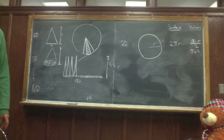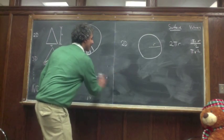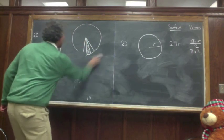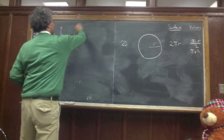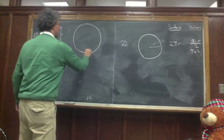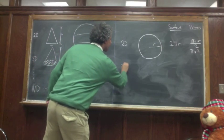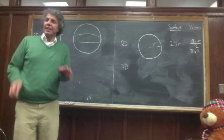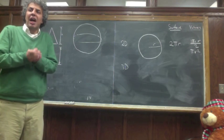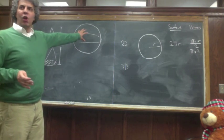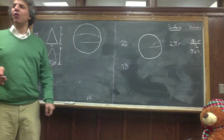Now we're going to go to three dimensions. The object we're going to have is going to be a sphere — you can imagine it being something like a watermelon. What I'm going to do is make exactly the same argument: I'm going to take this watermelon, this sphere, and break it into a bunch of cones.